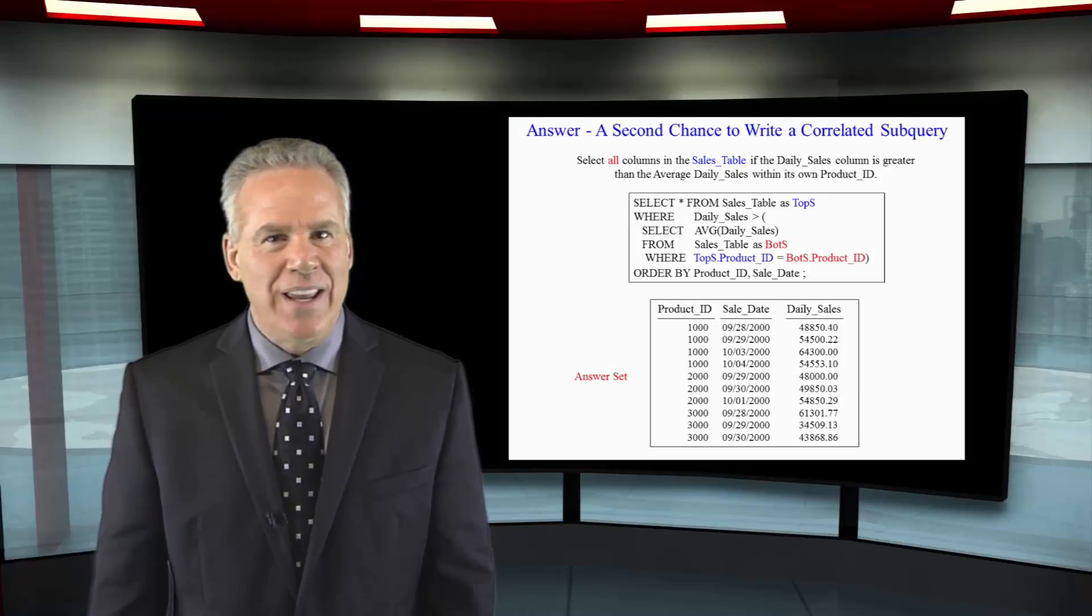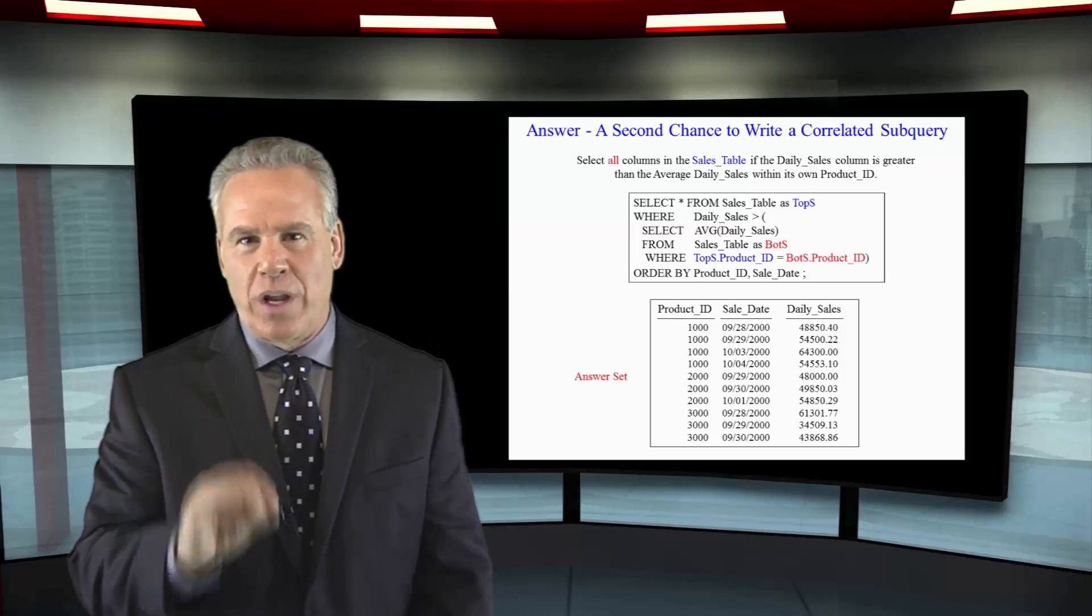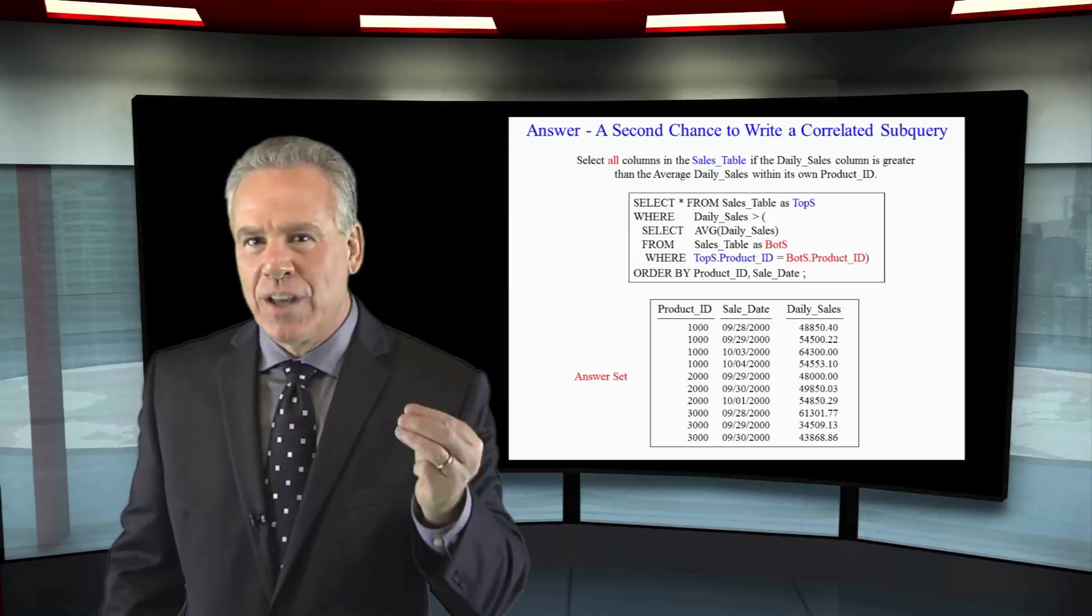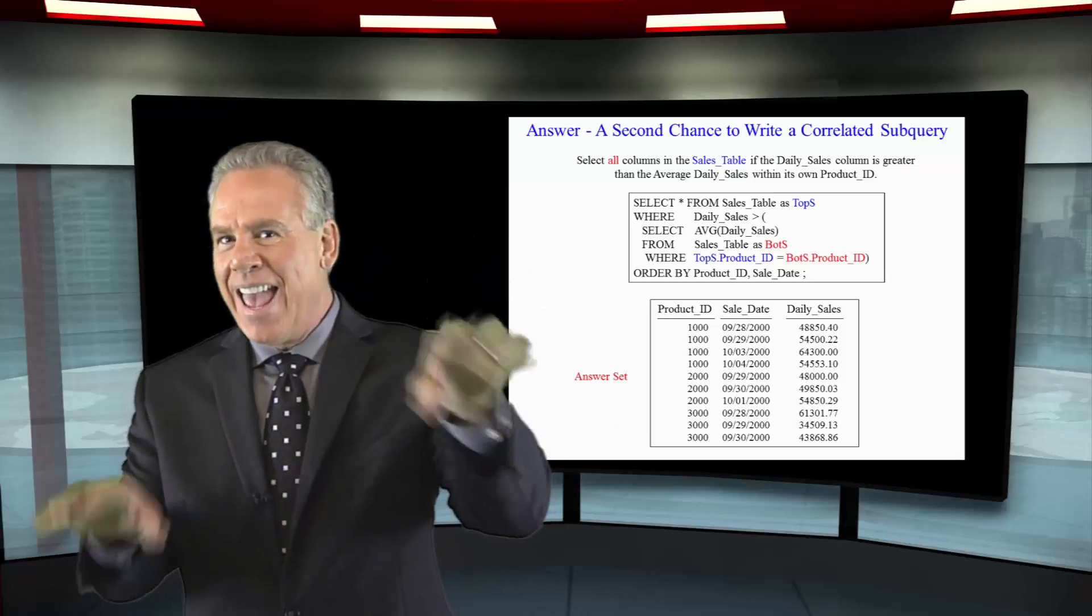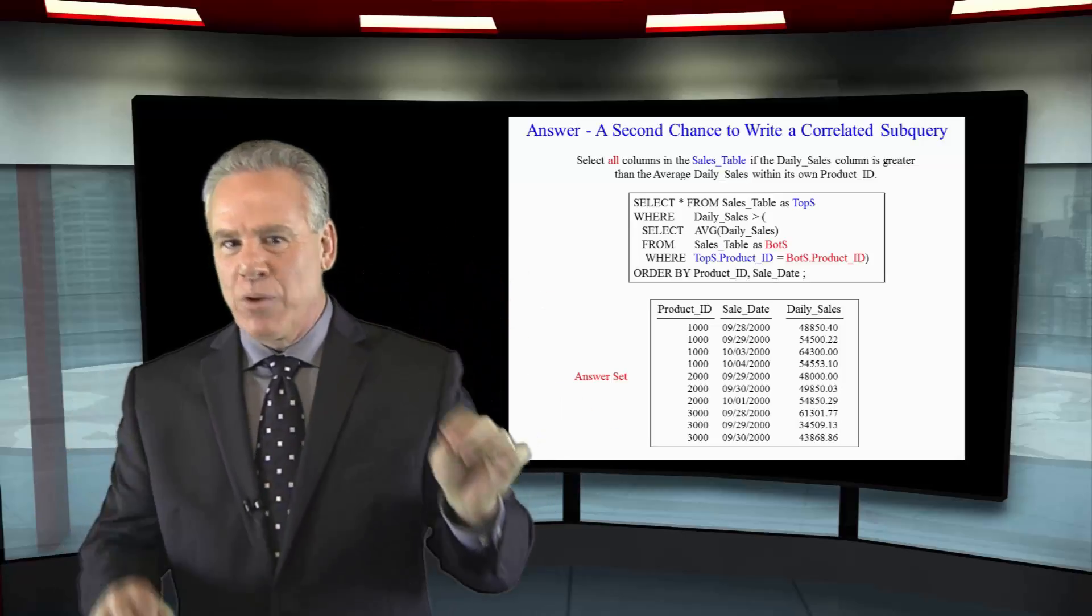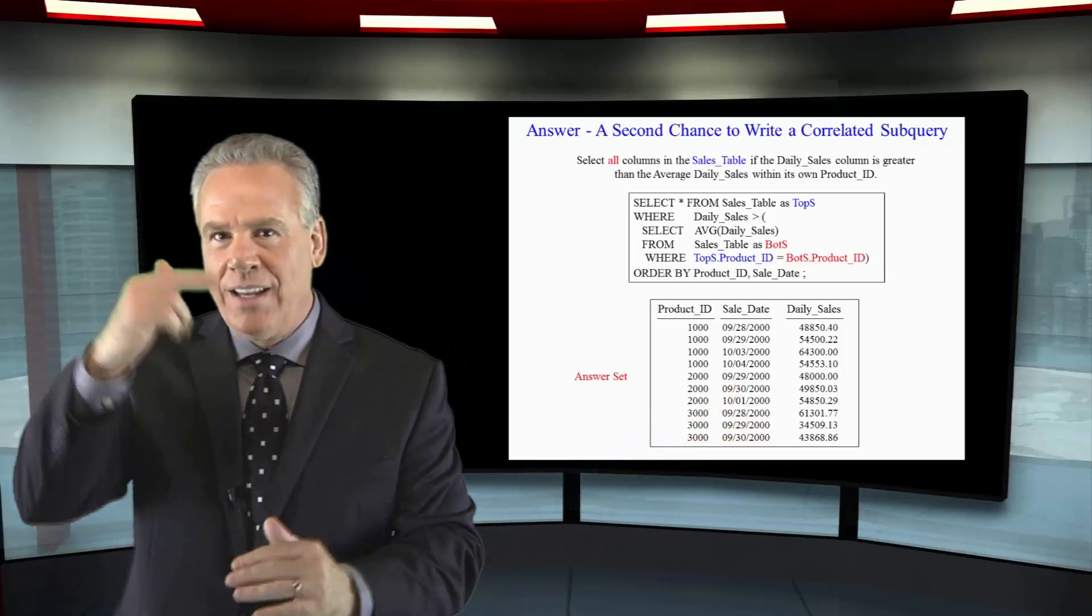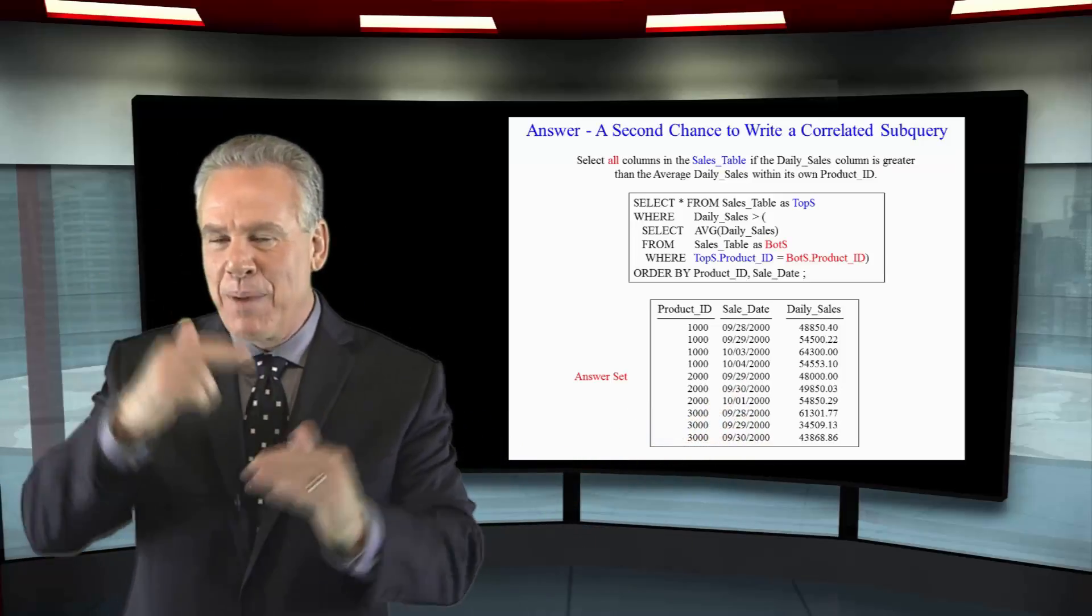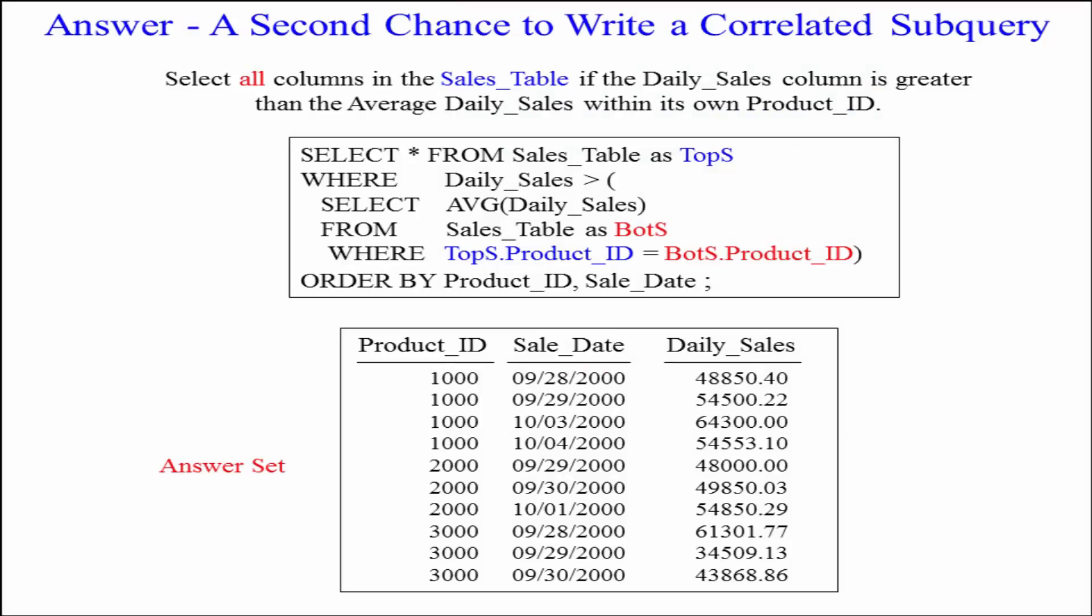How did you do? If you're getting this, then you are really doing well. If not, we've got a couple more chances for you. Now remember, in a correlated subquery, it's going to have the same table named twice, aliased differently, and we're going to bring that bottom where clause uniting those two top and bottom queries together.